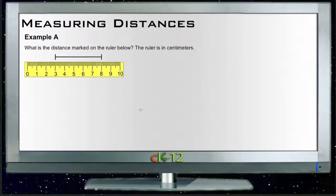Alright, let's take a look at these three examples here for measuring distances. The first example asks what the distance marked on the ruler below is, and notes that the ruler is marked in centimeters, so we're using a metric ruler here. This is really pretty simple, just remember your ruler postulate.